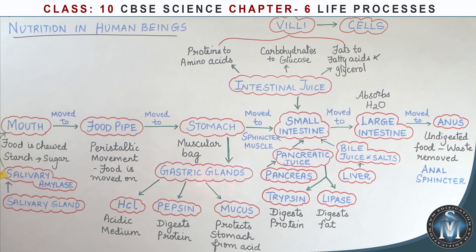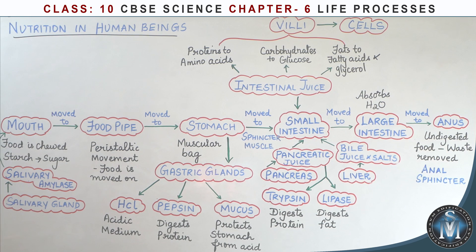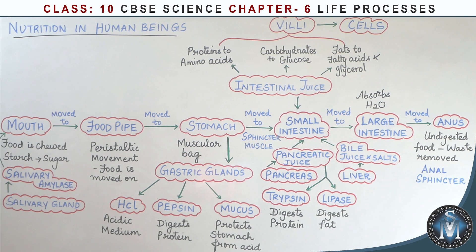Now let's talk about human nutrition. Food enters through the mouth, where we chew it. Our salivary glands secrete salivary amylase, which mixes with the food and converts starch into sugar. This food then moves into the food pipe.